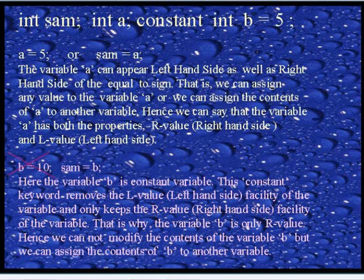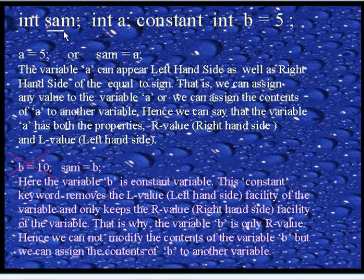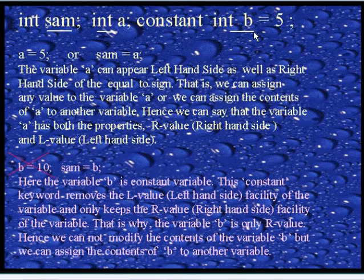Here I would like to discuss the concept of L-value and R-value. The variable SAM is an integer type of variable and variable A is also an integer type of variable. The variable B is a constant integer type of variable. Now consider the variable A: A = 5, which means we can assign the value 5 to the variable A, so we can modify the contents of A.